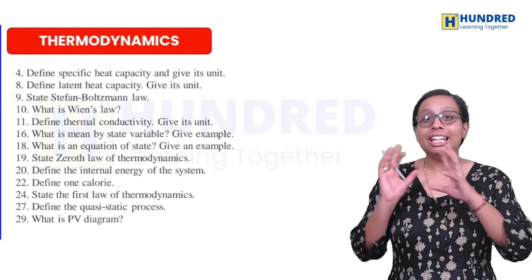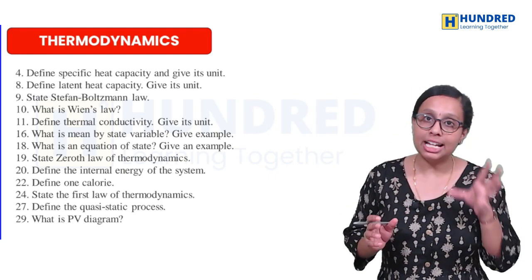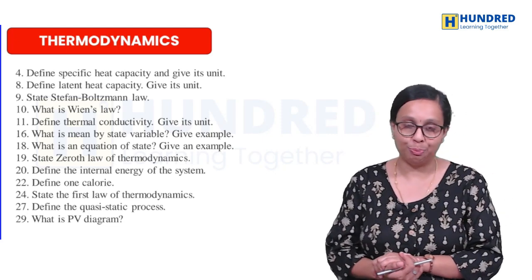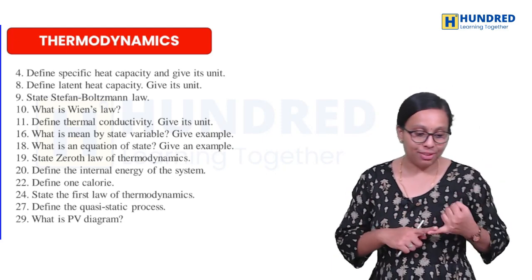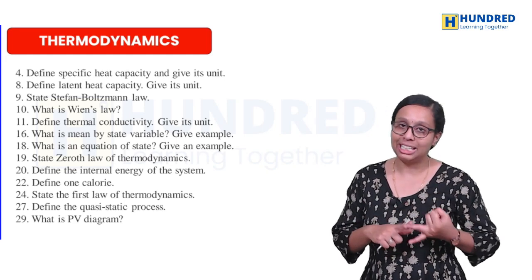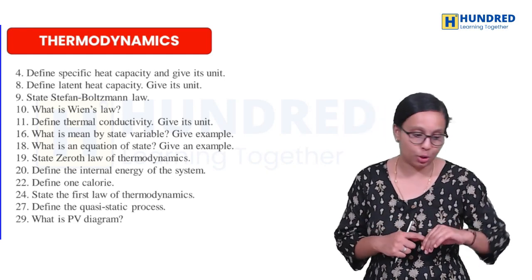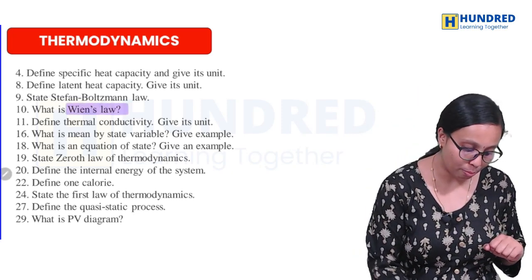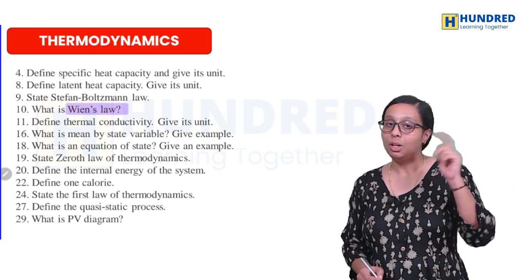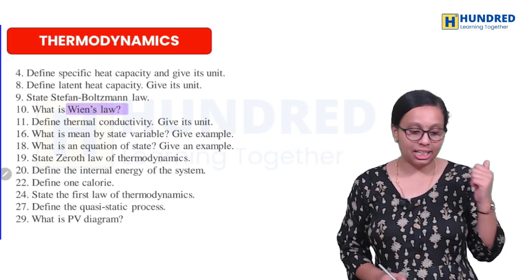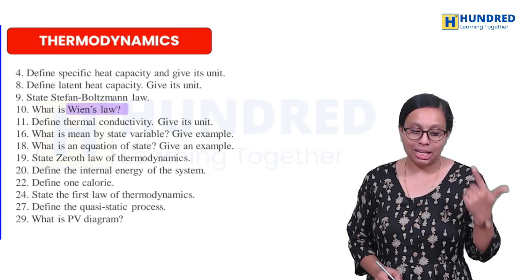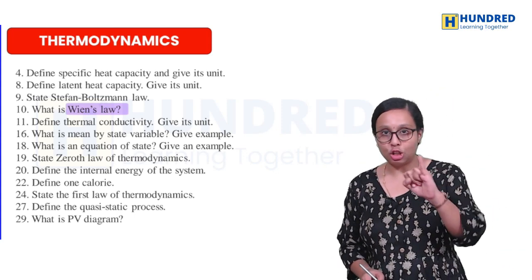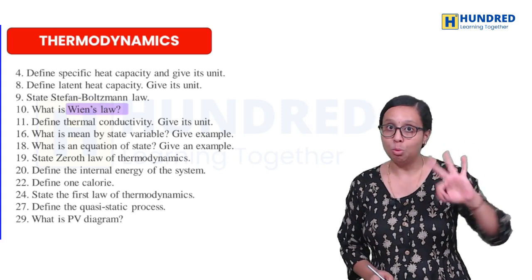The chapter is divided into two halves. You will need to attend five-mark questions. Important topics include: Specific Heat Capacity, Molar Heat Capacity, What is Heat Capacity, Latent Heat Capacity, Stefan-Boltzmann Law, and Wien's Displacement Law. These are very important questions that are repeated on the board. Also cover thermal conductivity, state variables, equation of state, and examples. Zero Law, First Law, and Second Law of Thermodynamics are very important.